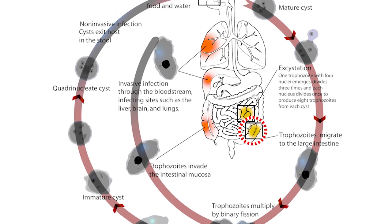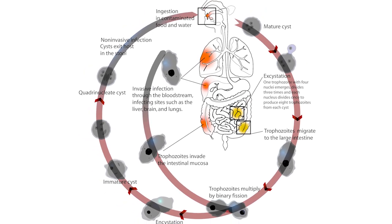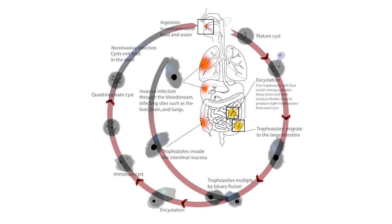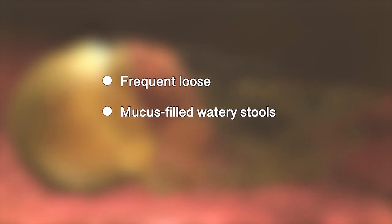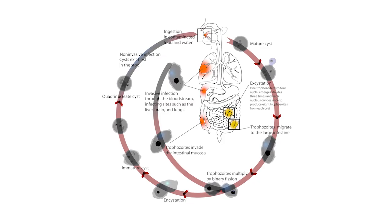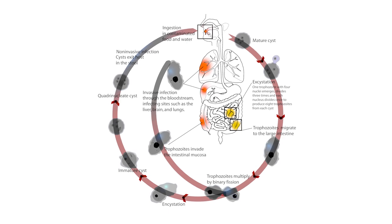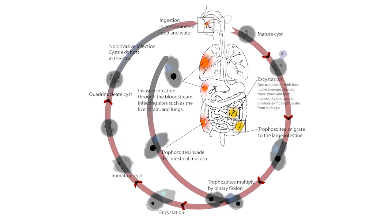The cyst reaches the large intestine and develops into a trophozoite, which feeds on the intestinal lining, resulting in amoebiasis or amoebic dysentery. The symptoms of the disease are frequent loose and mucus-filled watery stools, abdominal pain, and spasms. If the parasite enters the blood circulation, it can affect other human organs such as the liver and kidneys.